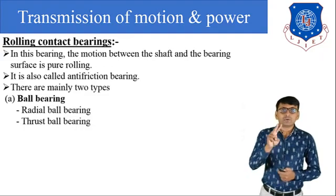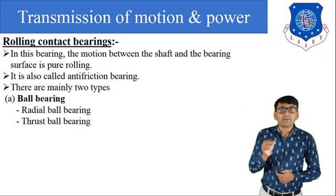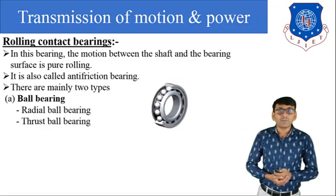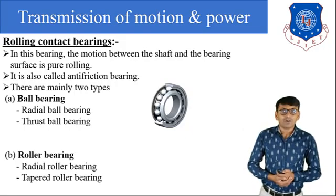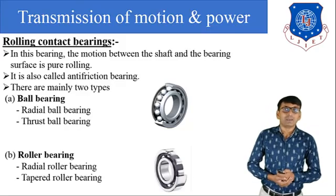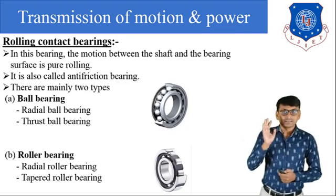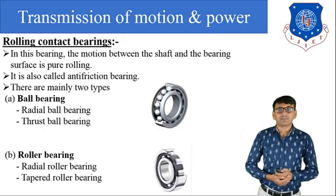There are mainly two types of rolling contact bearing: first, ball bearing — which includes radial ball bearing and thrust ball bearing; and second, roller bearing — which includes radial roller bearing and tapered roller bearing. In rolling contact bearing there is pure rolling motion between shaft and bearing surface.